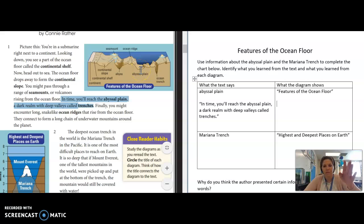If the title of this is features of the ocean floor, I'm learning about the abyssal plane. In the text, all I learned is that we reached this area and it's a dark realm with deep valleys. Now I can look more at this graphic and see that it's showing me the water, we're down here in the deepest part. Then we reached these super low areas or valleys that are called trenches. So what the diagram shows is that the ocean trenches are the deepest places on the ocean floor, deeper than an abyss.